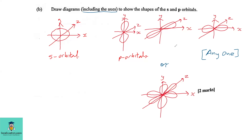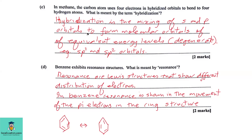You can draw any one to show the p orbital or draw all three together. Question 1c: In methane, the carbon atom uses four electrons in hybridized orbitals to bond to four hydrogen atoms. Hybridization is a mixing of s and p orbitals to form molecular orbitals of equivalent (degenerate) energy. In sp3 hybridization, one s orbital mixes with three p orbitals — this occurs in alkanes. In sp2 hybridization for alkenes, one s orbital mixes with two p orbitals, leaving one p orbital unhybridized to form pi electrons.